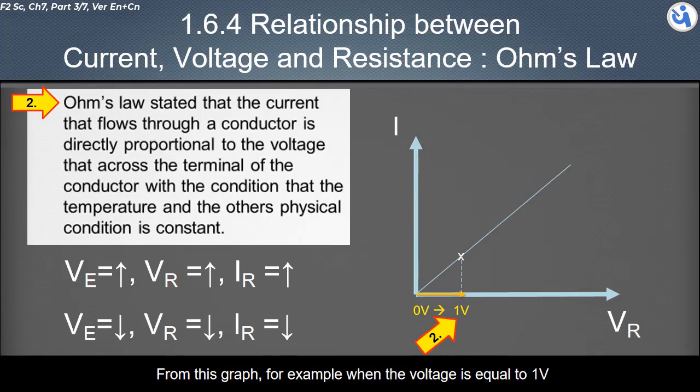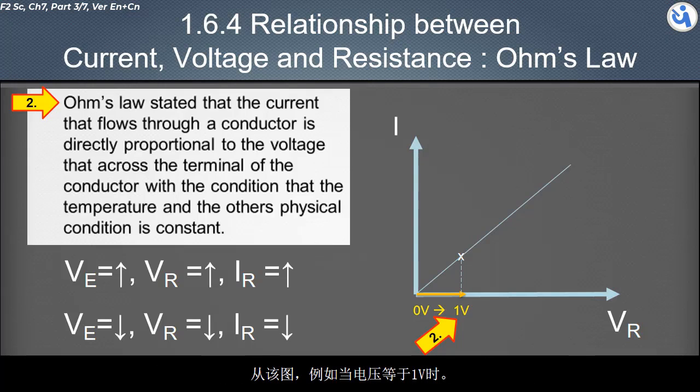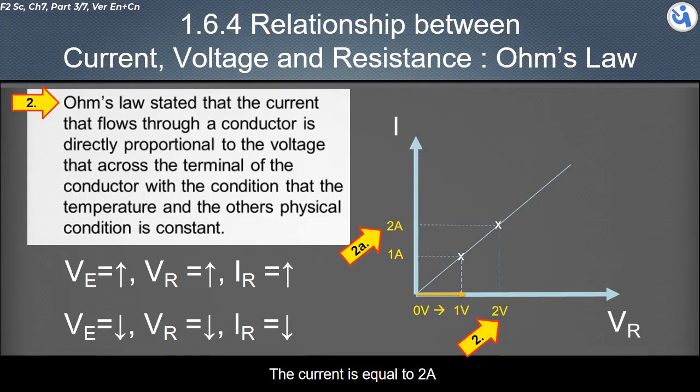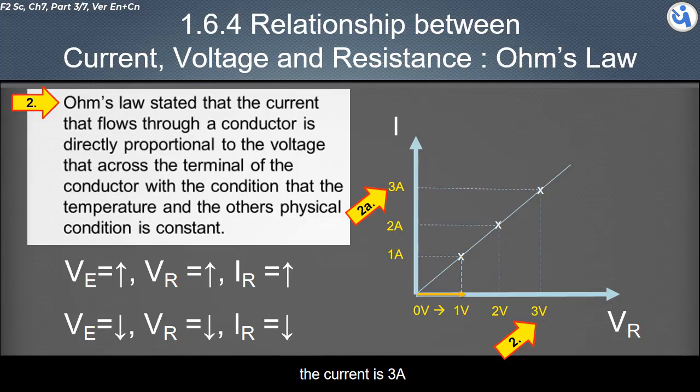From this graph, for example, when the voltage is equal to 1 V, the current is equal to 1 Ampere. When the voltage is 2 Volt, the current is equal to 2 Ampere. When the voltage is 3 Volt, the current is 3 Ampere.